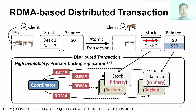Moreover, to provide high availability, existing systems incorporate primary-backup replication. Each data item has one primary and several backup replicas, and each replica can be accessed by multiple coordinators.